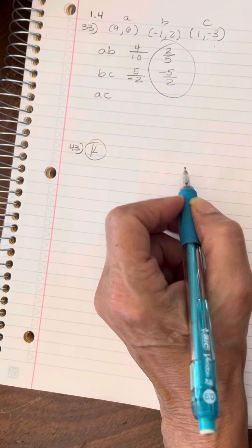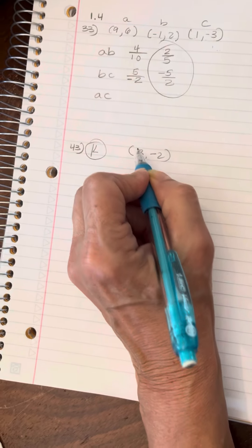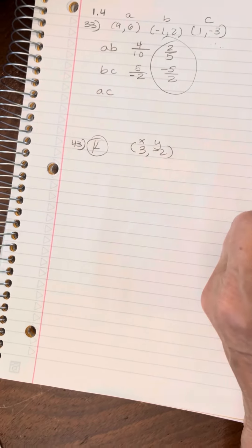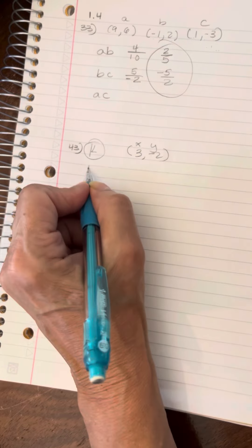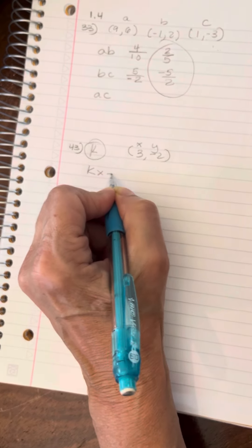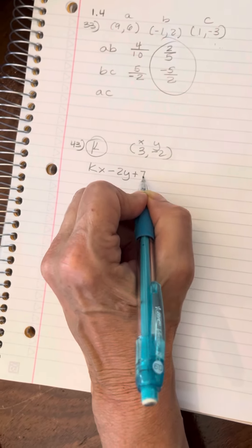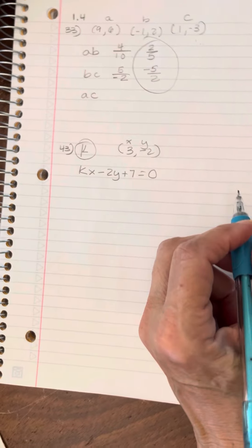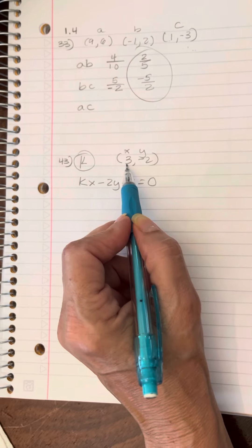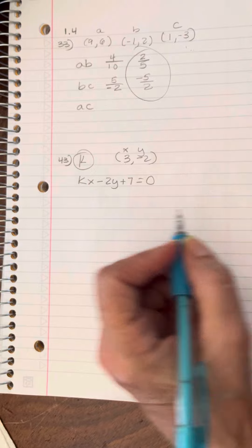Find a real number such that three, negative two, I have an XY coordinate, is on the line K, X minus two, Y plus seven equals zero. All I have to do is substitute the X and the Y into this equation and solve for K.